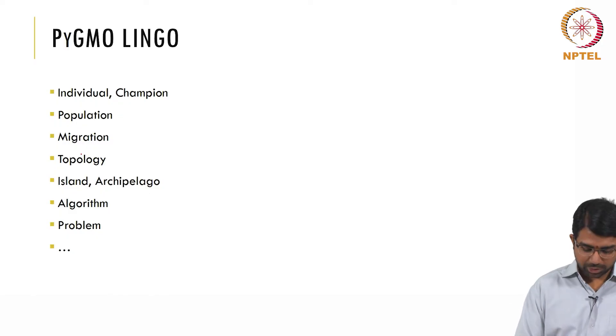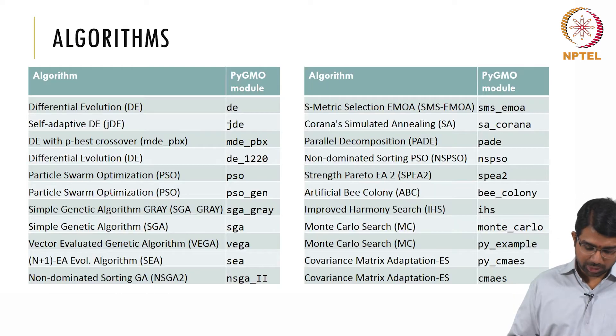Population, yes, of course. Migration is migration between different islands in an archipelago. So you set up multiple islands of optimizers and each island will have an algorithm which will run on a particular problem. You need to create a problem. This is basically object-oriented programming. So you need to define a problem class and so on and so forth.